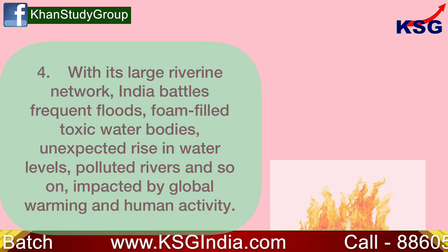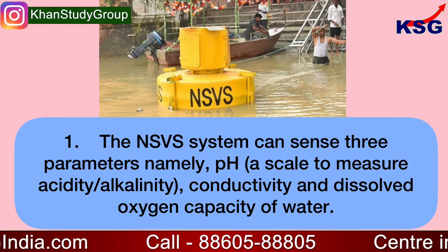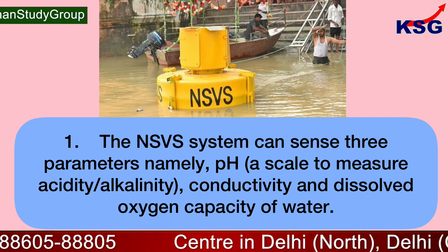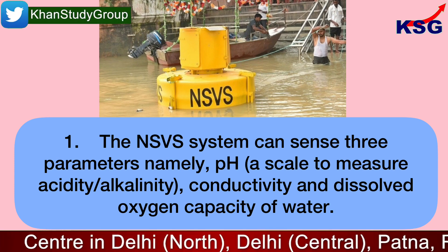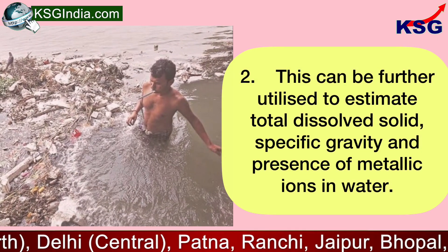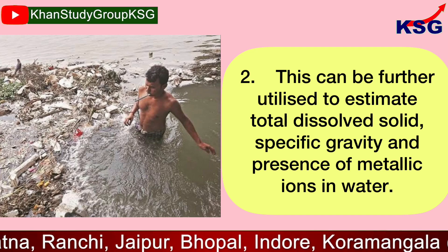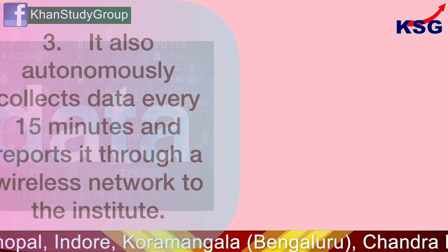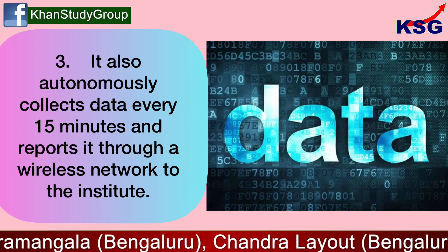The NSBS system can sense three parameters: pH — a scale to measure acidity or alkalinity — conductivity, and dissolved oxygen capacity of water. This can be further utilized to estimate total dissolved solids, specific gravity, and the presence of metallic ions in water. It also autonomously collects data every 15 minutes and reports it through a wireless network to the institute.